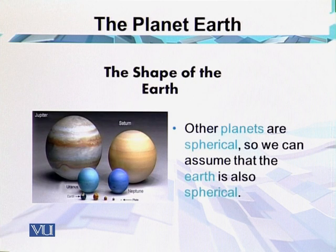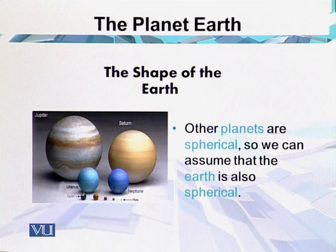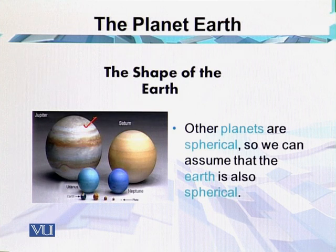Another evidence is that all the other planets of the solar system are spherical, so we can assume that the earth is also spherical. For example, Jupiter — the largest planet in the solar system — is in a rounded shape, and Saturn is also in a rounded shape. That is why the earth is also in a rounded, spherical form.